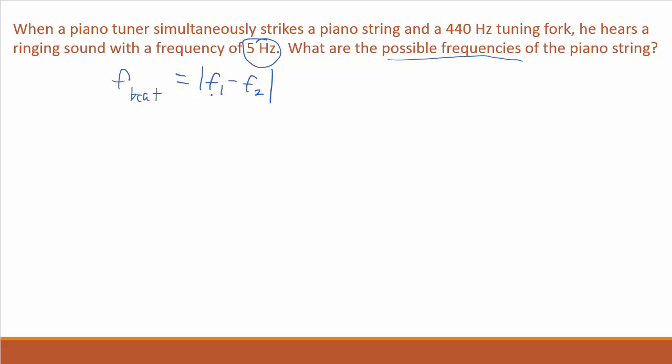our equation for the beat frequency is f1 minus f2. You don't even need to really even write down this frequency. You just know that the frequencies, if they're ringing at 5, have to be off by 5. So this is going to be 440 plus or minus 5. So the two options are 445 Hz, or it could be ringing at 435 Hz.